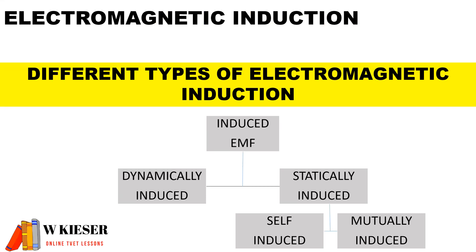For electromagnetic induction, there are different types. We have dynamically induced and statically induced. Dynamically induced EMF is due to physical motion, and statically induced EMF means that there is no physical motion. We have two types of statically induced EMF: self-induced EMF and mutually induced EMF.